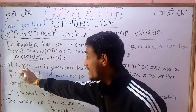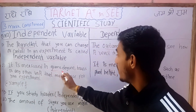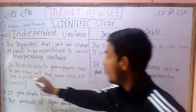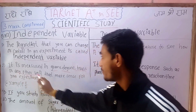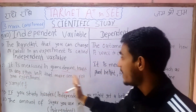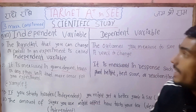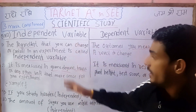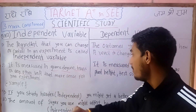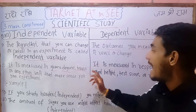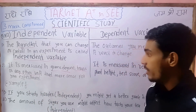The independent variable can be measured in grams, degrees, hours, or any other unit that makes sense for your experiment. It can be measured in grams, degrees, hours, or any other unit.